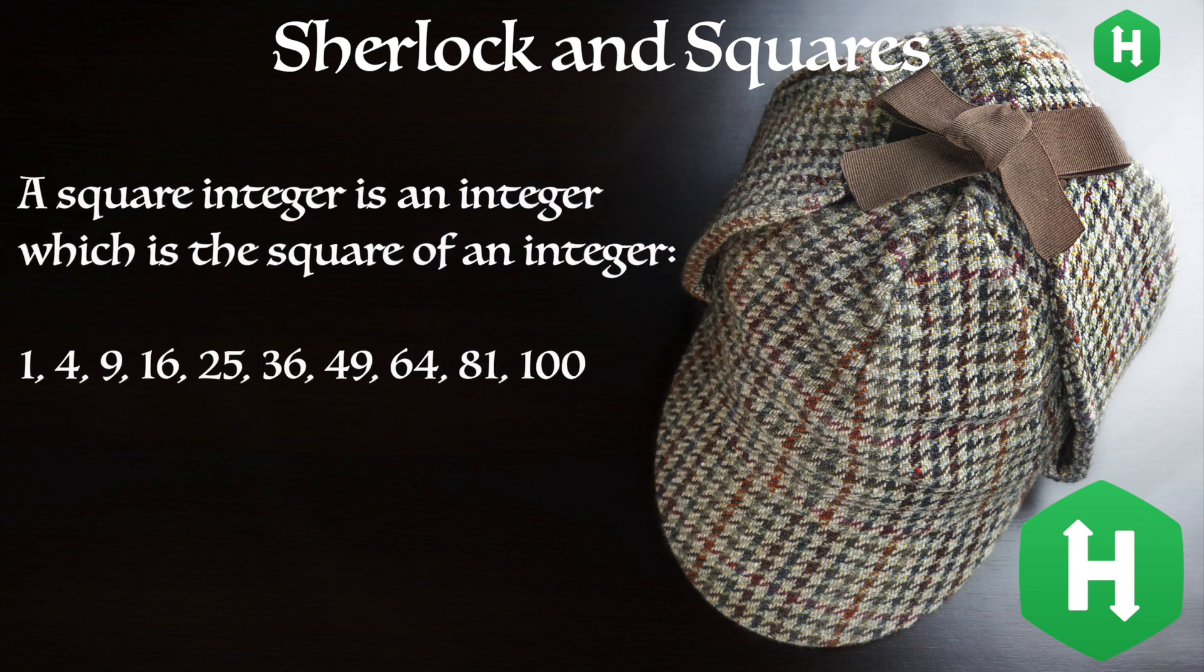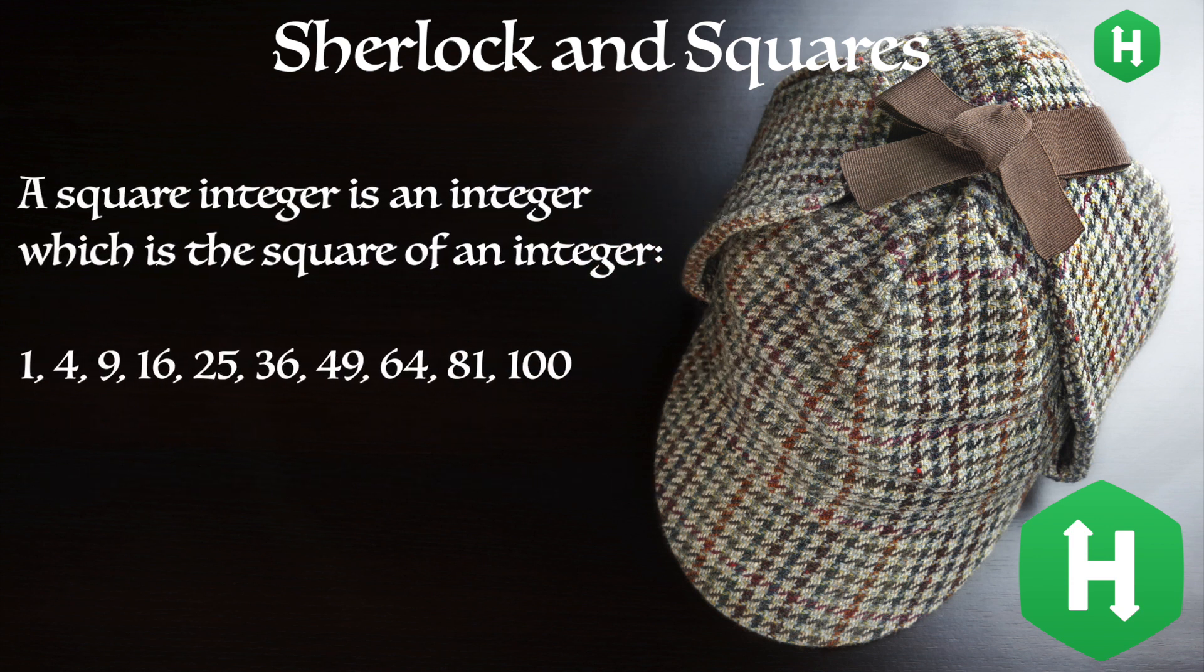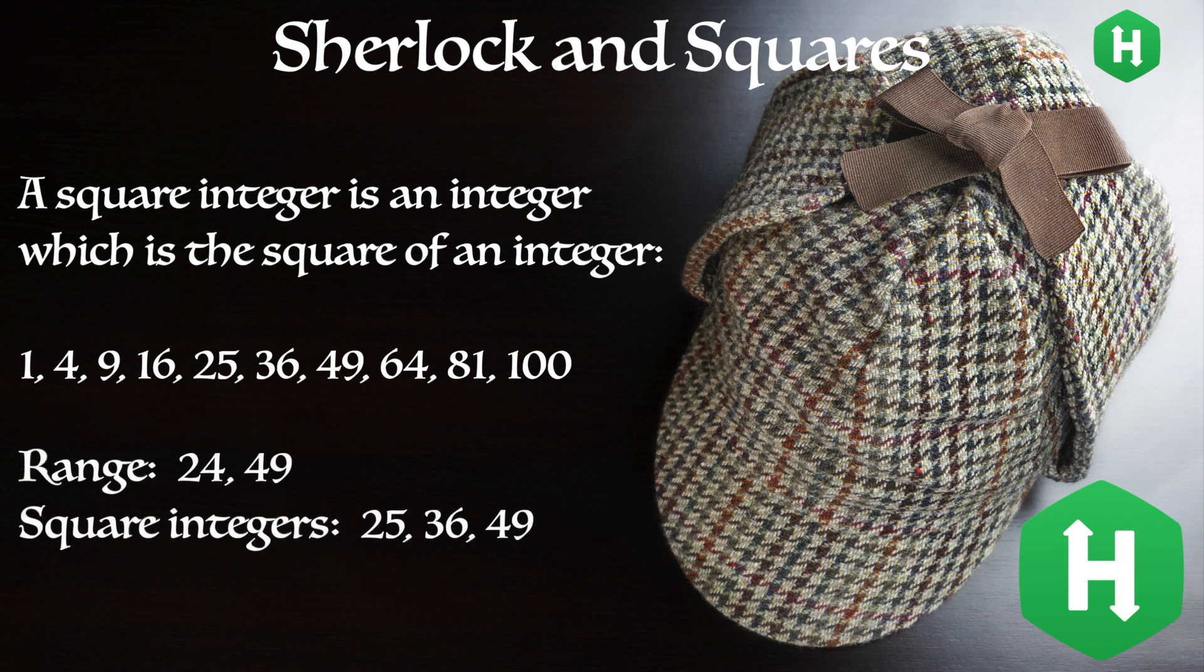A square integer is an integer which is the square of an integer. Given the range 24 through 49, the square integers are 25, 36, and 49.